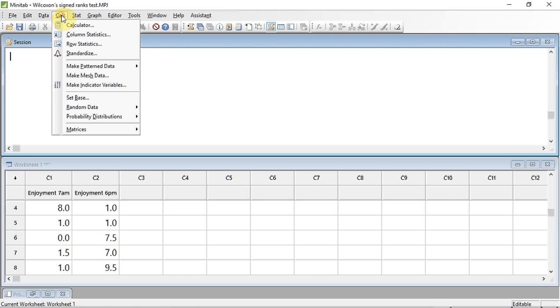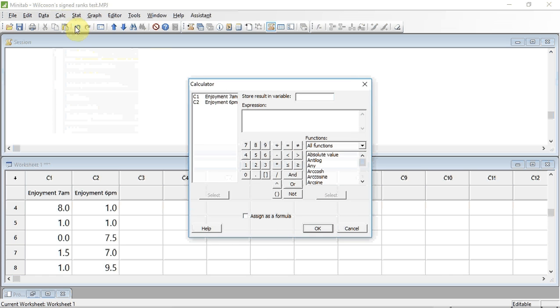Track up to Calc and click. Track down to Calculator and click. We're going to store the result in a variable, so we're going to click in the Store Result in Variable box and I'm going to enter the word Difference.